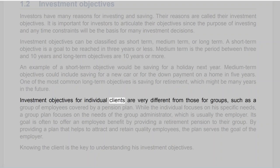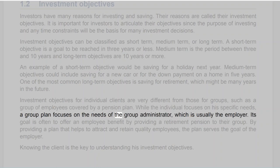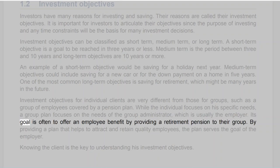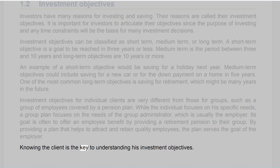Investment objectives for individual clients are very different from those for groups, such as a group of employees covered by a pension plan. While the individual focuses on his specific needs, a group plan focuses on the needs of the group administrator, usually the employer, whose goal is often to offer an employee benefit by providing a retirement pension. By providing a plan that helps to attract and retain quality employees, the plan serves the goal of the employer. Knowing the client is the key to understanding his investment objectives.